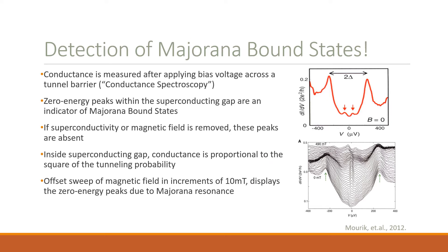The question becomes: how do we detect Majorana bound states in this system? This group performed a conductance spectroscopy by applying a bias voltage across the tunnel barrier and measuring the conductance. The spectroscopy at an applied magnetic field of zero is shown here, where dI/dV corresponds to the conductance and V is the applied bias voltage. These peaks determine the superconducting gap, represented by 2Δ. In between this region, electrons don't have enough energy to overcome the tunnel junction, and the conductance is proportional to the square of the tunneling probability, whereas past this peak, the conductance is linearly proportional to the tunneling probability.